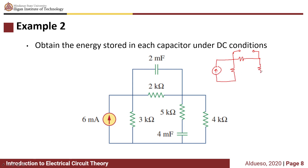We have a circuit with a 4k, 5k, and 2k resistor, and the current source is 6 milliamperes. Remember, the energy stored in a capacitor is given by one half C times V squared. So we have the values of the capacitance, and now we will get the values of the voltages across each capacitor.